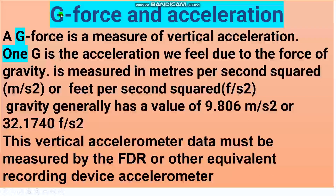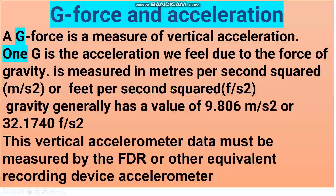What about G? G is the gravity force and the acceleration to the ground. The G force is a measure of vertical acceleration downward. 1 G is the acceleration we feel due to the force of gravity of the Earth, measured in meters per second squared or feet per second squared.